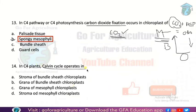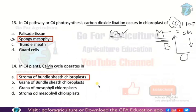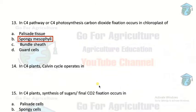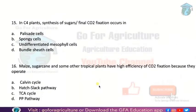Next: in C4 plants, where does the Calvin cycle occur? The answer is the bundle sheath cells. Very good job. You know, both these previous questions are related — CO2 fixation starts in mesophyll cells, but the Calvin cycle occurs in bundle sheath cells.